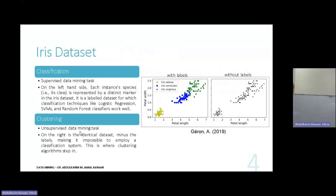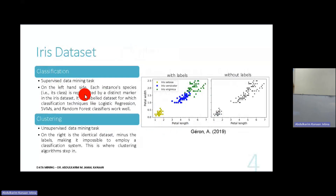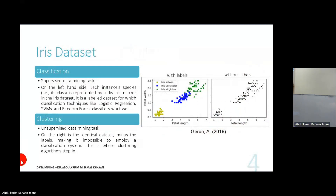Like we saw in the practical session, the Iris dataset is a labeled dataset. Since it is labeled, you can go with classification. But if the Iris dataset has no label, or you choose to work on it without the label and take away the label, it becomes unlabeled. Then you need to use a clustering algorithm.